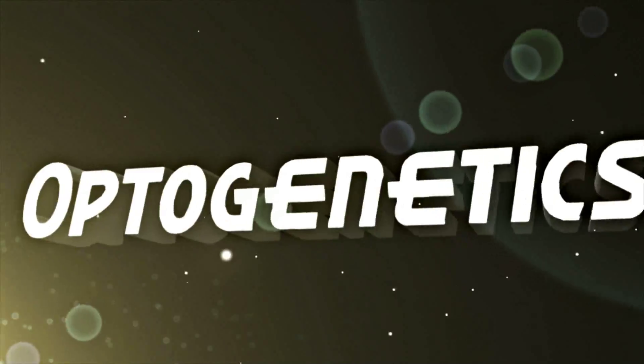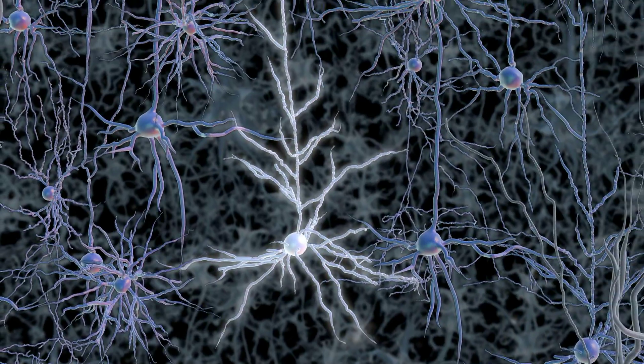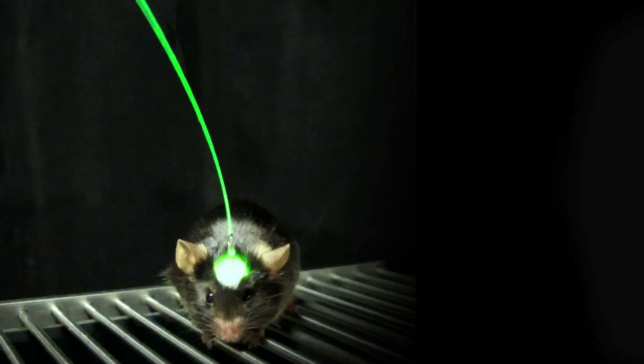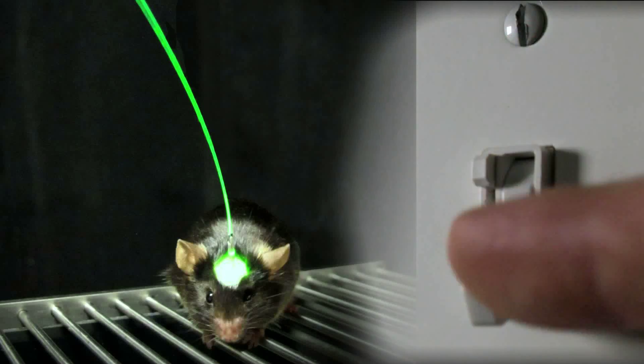This new revolutionary field is called optogenetics. It enables scientists to selectively turn target neurons in animal brains on and off just by shining certain types of light on them.